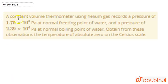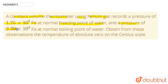Hello everyone! So, question: at constant volume, a thermometer using helium gas records a pressure of 1.75 × 10^4 Pascal at the normal freezing point of water, and a pressure of 2.39 × 10^4 Pascal at the normal boiling point of water. Obtain from these observations the temperature of absolute zero on the Celsius scale.